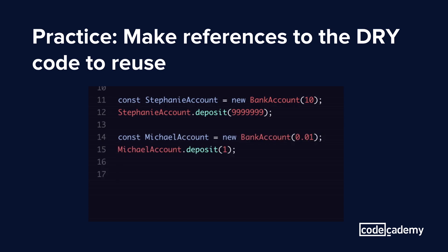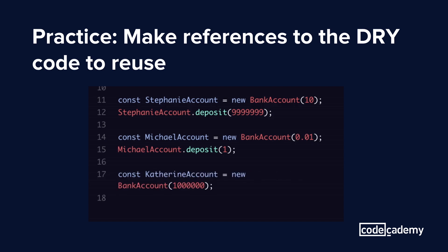So here we're making Stephanie's, Michael's, and Katherine's accounts using our new bank account class, and they can deposit using the function that belongs to the class without rewriting the logic for it three separate times.